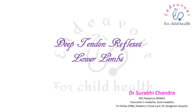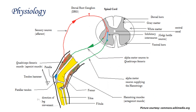This video demonstrates how to elicit the deep tendon reflexes of the lower extremities. The physiology of a deep tendon reflex involves striking the tendon of a muscle, thus creating a slight passive lengthening of the muscle spindles. This in turn causes reflex contraction of the muscle by stimulating the alpha motor neurons which directly supply it.